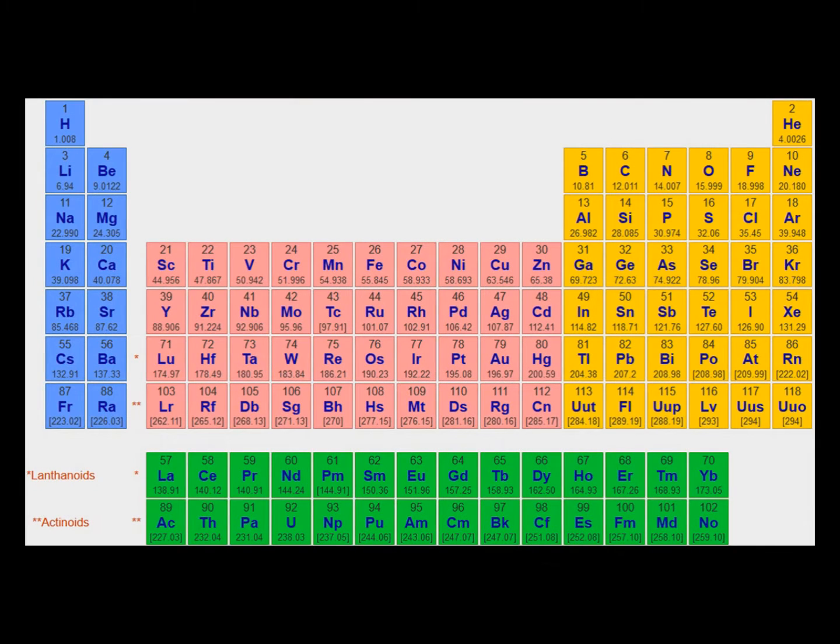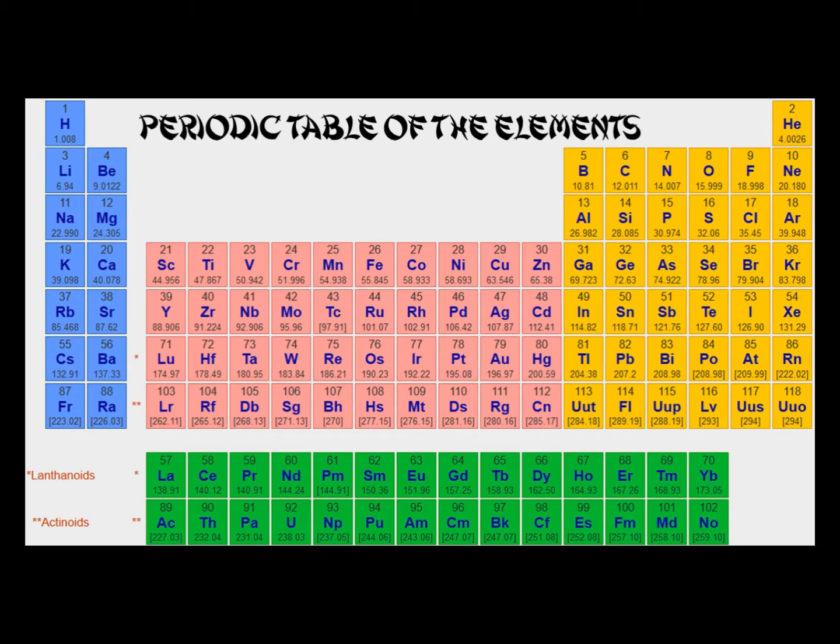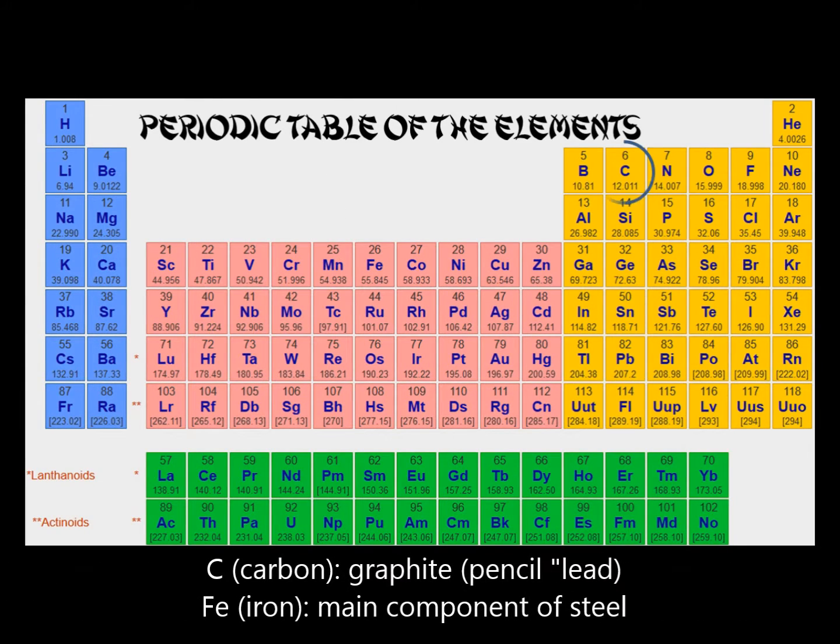All elements have a chemical symbol, consisting of one or two letters, which is what is displayed on the periodic table of elements. The periodic table gives all the elements that have been discovered or made thus far. Notice how the first letter is always capitalized, and if there is a second letter, it is always lowercase. For example, the chemical symbol for carbon is C, and Fe is the symbol for iron, two different types of atoms.